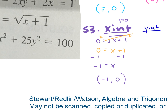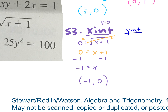Now find the y-intercept — plug in 0 for x: y equals the square root of 0 plus 1. We don't need to square both sides here. 0 plus 1 is 1, and the square root of 1 is 1. So the y-intercept is (0, 1).